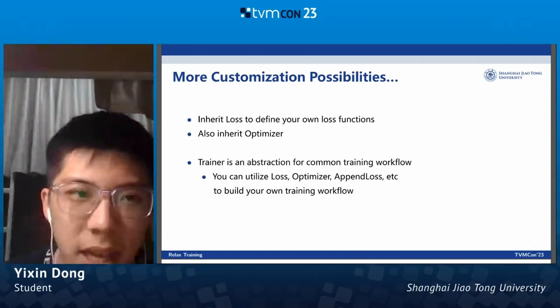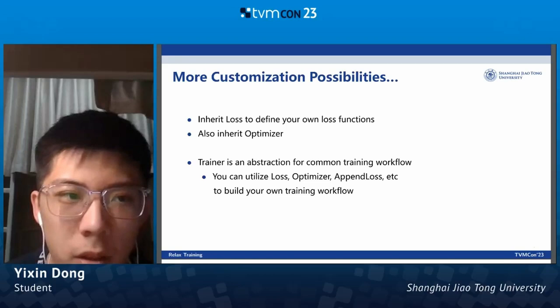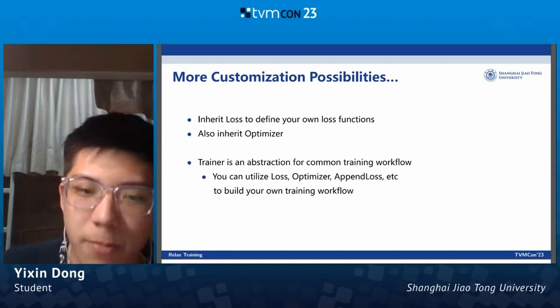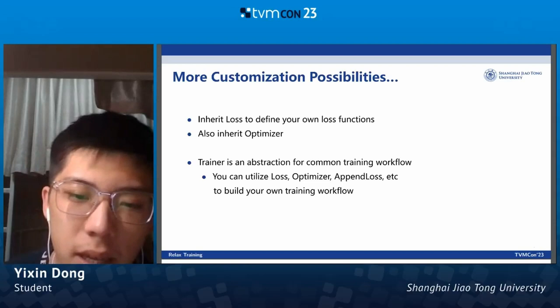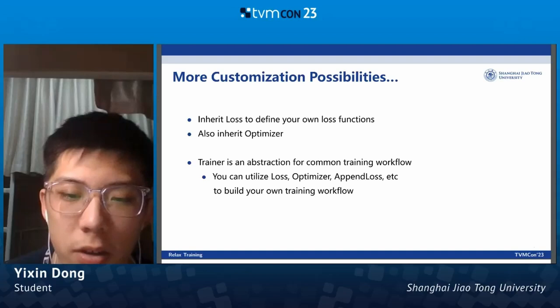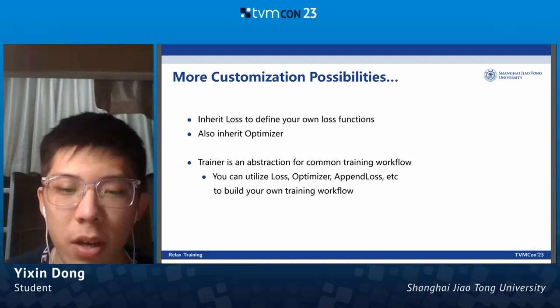One benefit of these abstractions is that we provide more customization possibilities. For example, you can inherit the loss class to define your own loss functions, or inherit the optimizer class to define your own optimizers. Our trainer utility is an encapsulation of common training workflows that most deep learning tasks will adopt. However, if you need to adopt some special training workflow, you can also use the ADPath, the loss function, the optimizer, and so on to build your own training workflow.